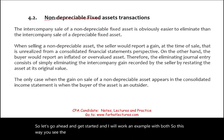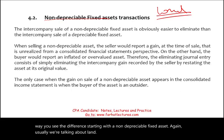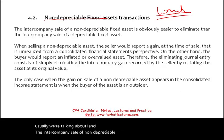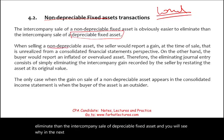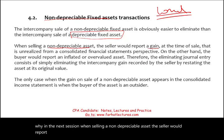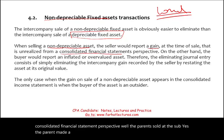Starting with non-depreciable fixed assets — usually land — the intercompany sale of a non-depreciable asset is easier to eliminate than a depreciable one. When selling a non-depreciable asset, the seller reports a gain — most of the time a gain, could be a loss — that is unrealized from a consolidated financial statement perspective. The parent sold it to the sub, so yes the parent recorded a gain, but when the sub and the parent combine, that gain has to be removed.